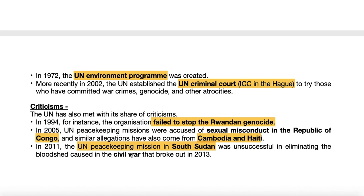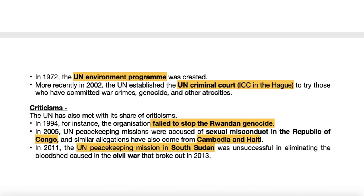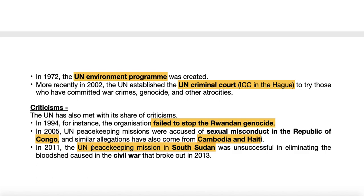Another major failure relevant to India is the United Nations Security Council reform issue. India and the G4 countries — India, Germany, Brazil, and Japan — are arguing for a democratic reform and expansion of the Security Council to reflect modern-day realities. However, the UN has failed to transform itself and remains stuck in the 1945 era. This is a major criticism: that the United Nations is not up to date and does not reflect the realities of today's world.